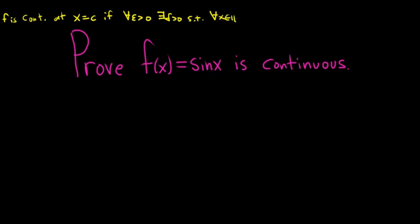so for all x in R, with the property that the distance between x and c is less than delta, we have that the distance between f(x) and f(c) is less than epsilon. So that's the delta epsilon definition of continuity, so we're going to use that to do the proof here.